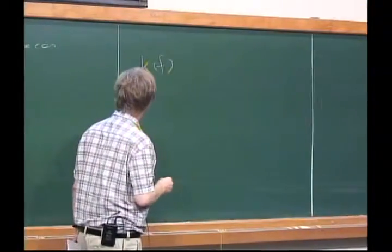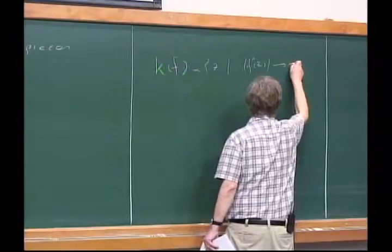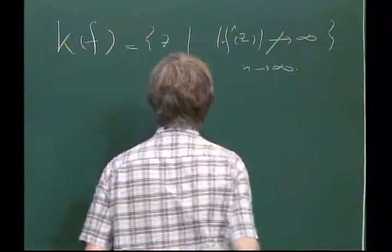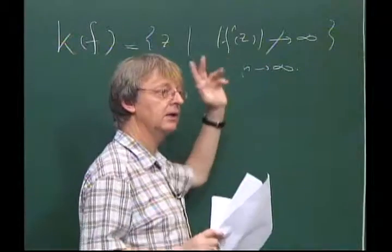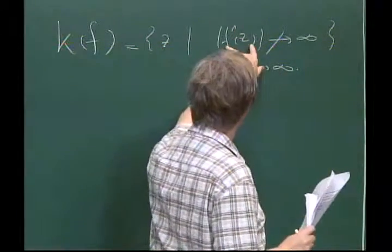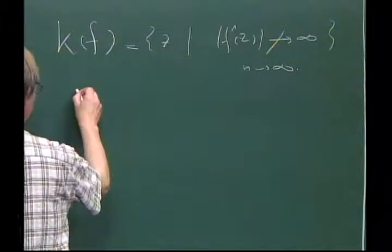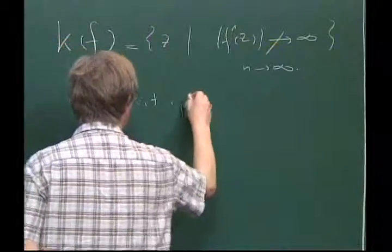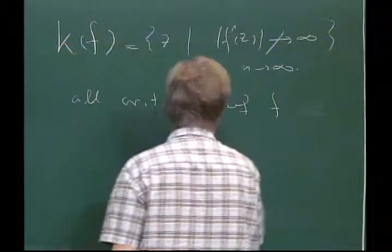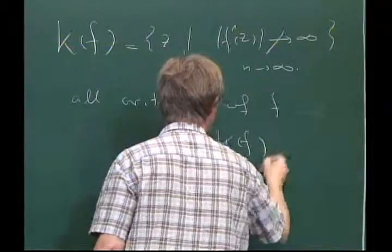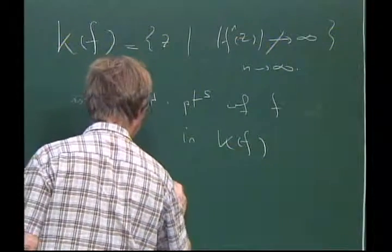To explain this more carefully I will first make a small digression. For a polynomial we can talk about points in the complex plane and ask whether an orbit goes to infinity or not. The filled Julia set K_f consists of the points that do not go to infinity — equivalently, f^n(z) remains bounded. We consider the case where all critical points of F are non-escaping, i.e., in K_f, and if that's the case K_f is connected.